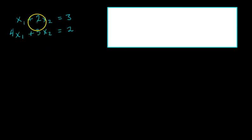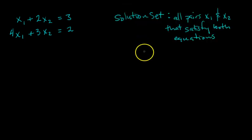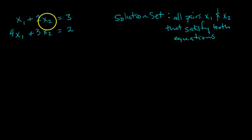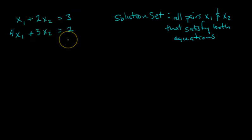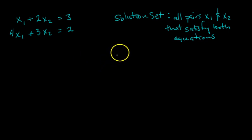Over here on the left, you can see a system of two linear equations with two unknown variables, x1 and x2. The goal is to find the solution set to this system — all the pairs (x1, x2) that satisfy both equations. When you plug them in, you should get 3 equals 3 and 2 equals 2. Sometimes the solution set has infinitely many pairs, sometimes just one, sometimes none — we'll discuss those cases in a later video.